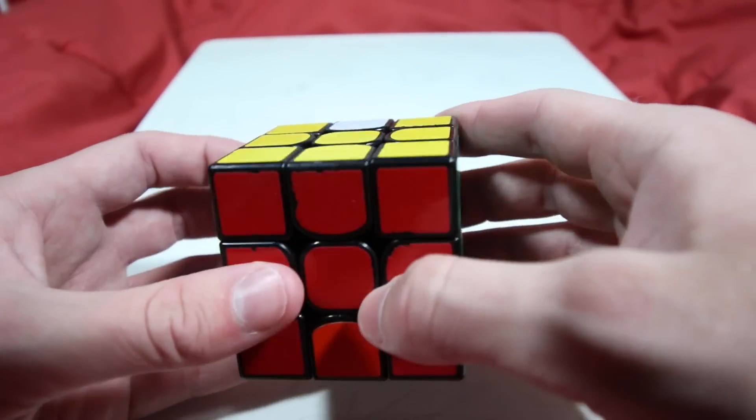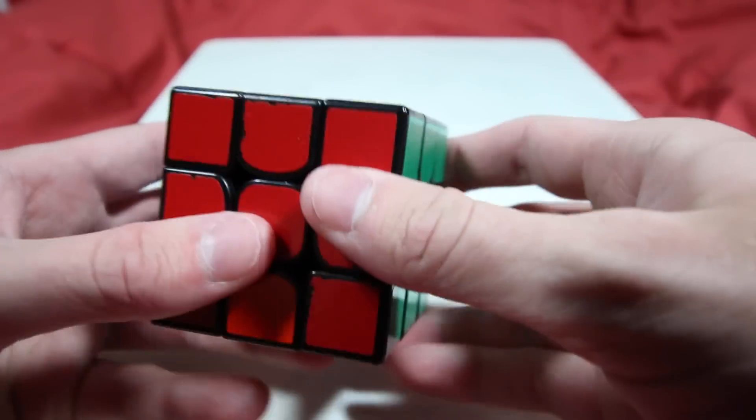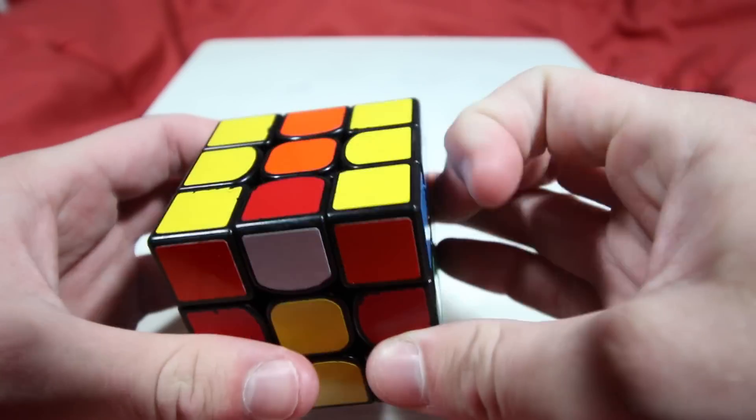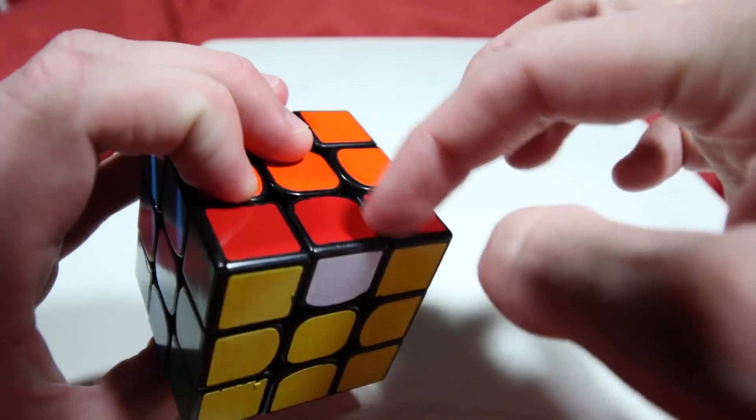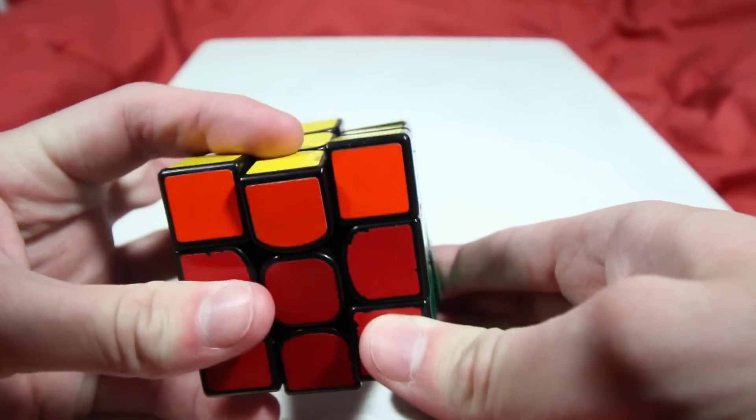From here, you'll have at most four edges left unsolved, and those can be solved very easily just by using that same edge insertion technique into the bottom layer as we've been using the whole time. It won't mess up anything else, so from there, you'll be done.